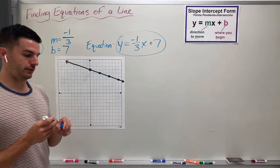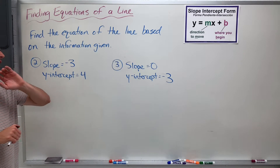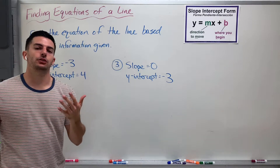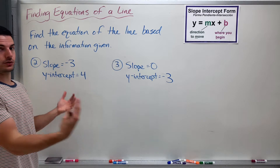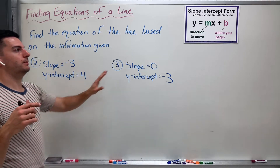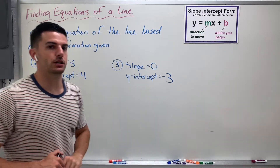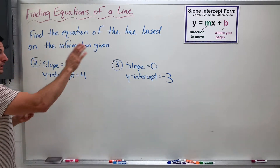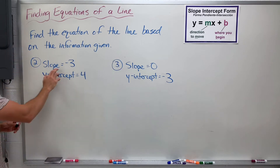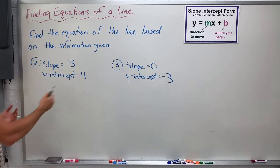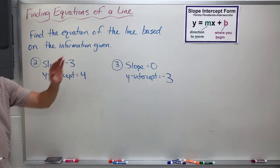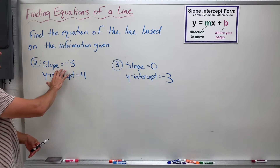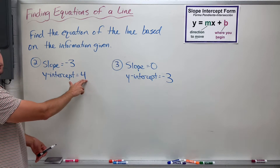Now I'm going to get into the new stuff that's a little bit different. I have numbers 2 and 3 up here. This is a scenario where we're still asked to find the equation of a line, but in Unit 3 we're not going to be shown the actual graph. We're mainly just dealing with the slope-intercept equation, knowing what the M and B values mean. So here is the easiest situation: find the equation of the line based on the information given — this line has a slope of negative 3 and a y-intercept of 4.